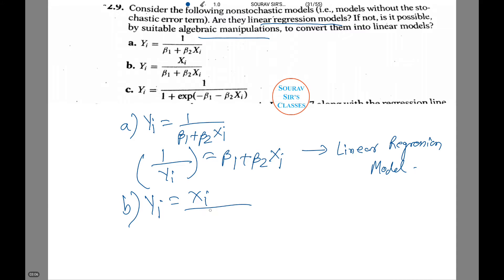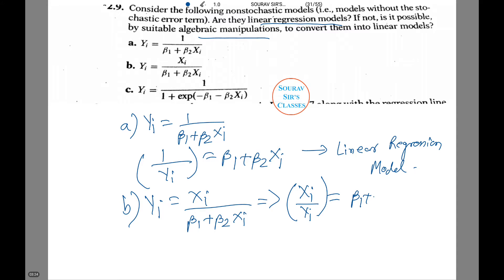Now for number (b): yi equals Xi divided by (beta1 plus beta2 Xi). We write the model as Xi/yi equals beta1 plus beta2 Xi. This is in fact another linear regression model.